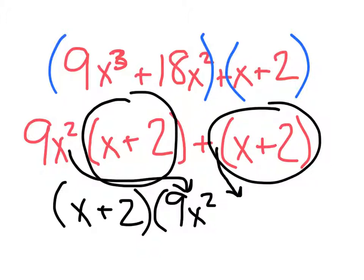We know from experience that really, there's an invisible 1 in front of those parentheses. So I need to make sure that I put that 1 in my answer. So my answer is (x + 2)(9x² + 1).